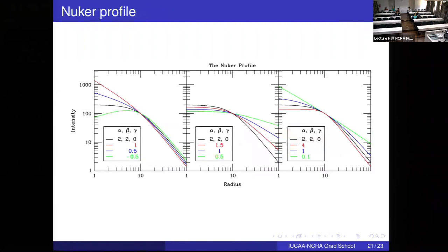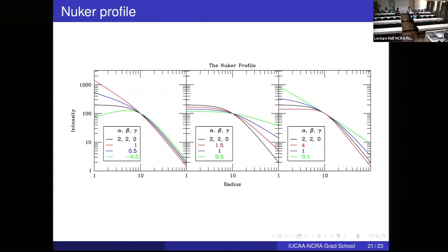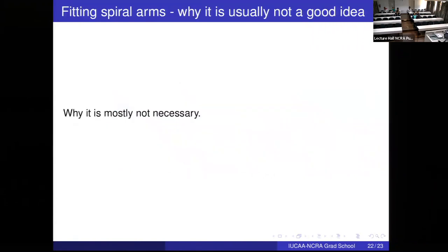The Nuker profile is used at very small radii — only the nuclear region is fitted, not the whole galaxy. This was also practical with HST because nearby galaxies are larger than HST's small field of view, so only the central part could be observed. Lauer et al. chose to measure the Nuker profile from those central region images.